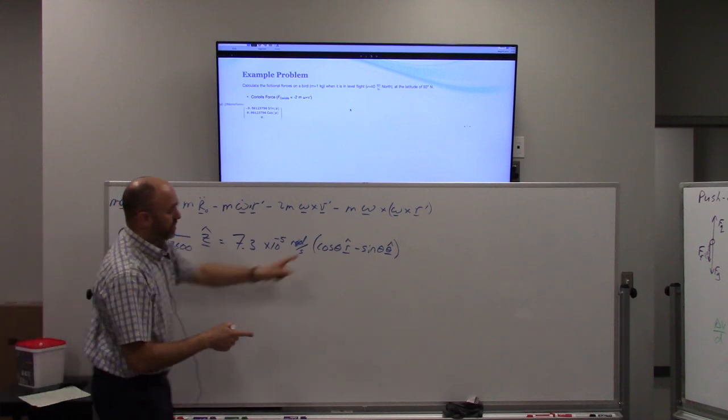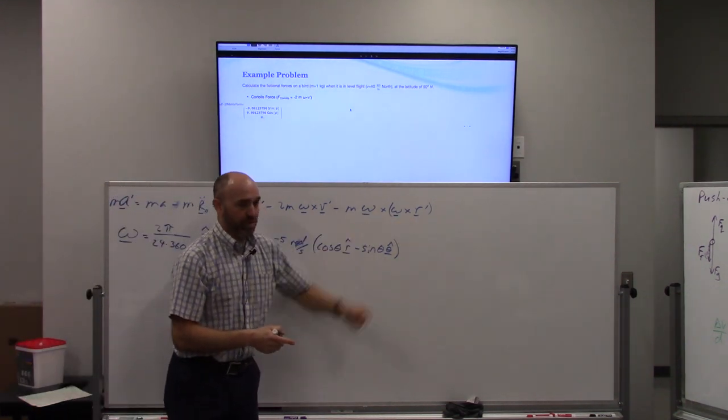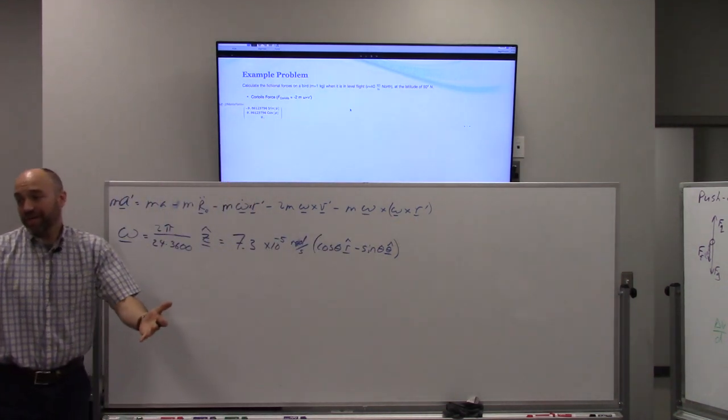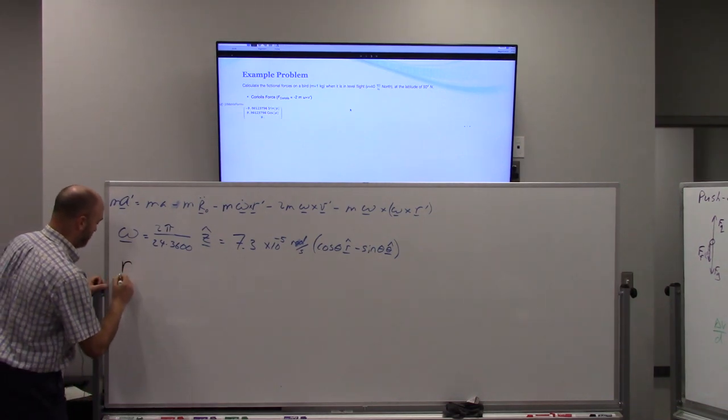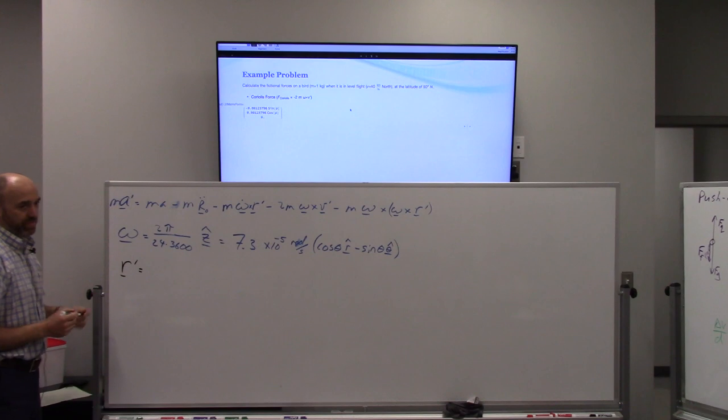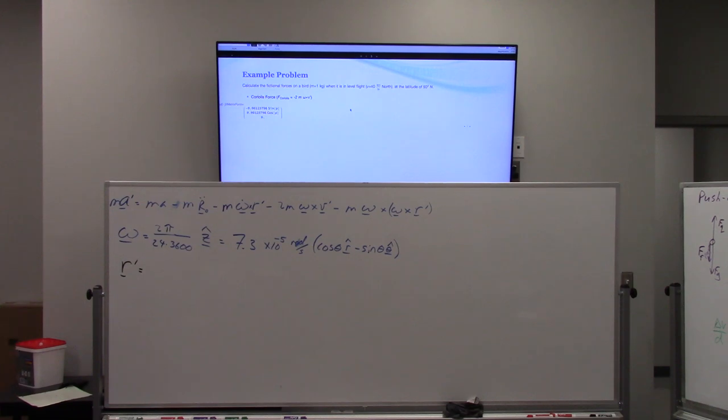Omega cross r prime. We've already got omega. All we need now is r prime. What's r prime? Say it again? Yeah. So what's r prime? 637,800. Yeah, that's right.